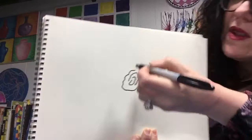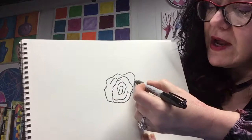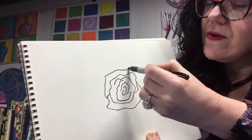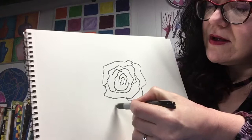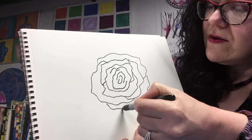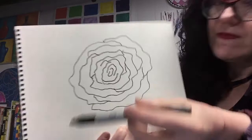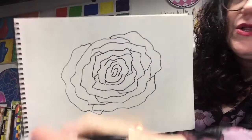Think of each petal like a lettuce leaf — just kind of loose and flowing. Each one is going to get a little bit bigger as you loop around, getting a little wider as you go. Keep going around and around; you want this to be pretty big, so keep going towards the edge of the paper. The petals are pretty loose.